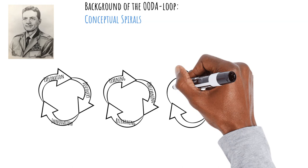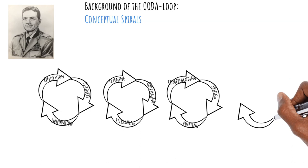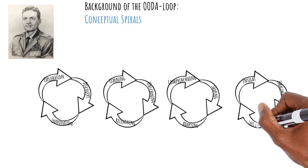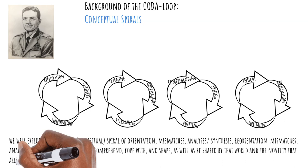We will also go through spirals of comprehension — what is happening, shaping the situation to our advantage, and adapting to the new reality. So in summary, we will go through an unending set of loops that cover, in the relevant context, insight, imagination, and initiative. Or, to quote Boyd: we will exploit this whirling, conceptual spiral of orientation, mismatches, analyses synthesis, reorientation, mismatches, analyses synthesis, so that we can comprehend, cope with, and shape, as well as be shaped by that world and the novelty that arises out of it.